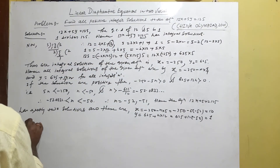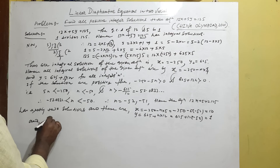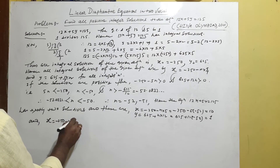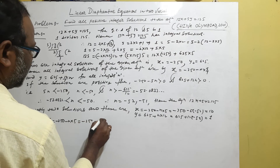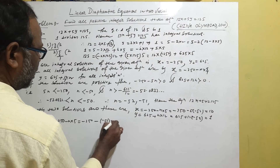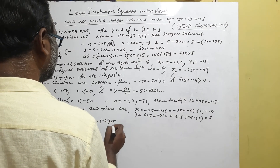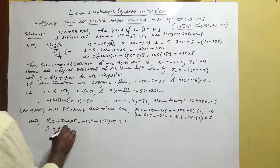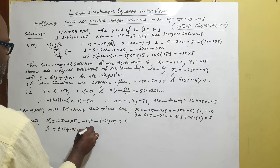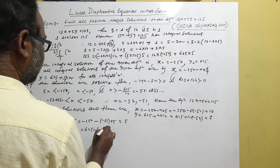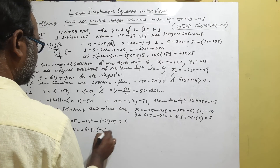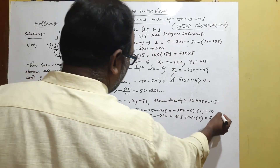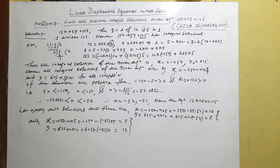For n = -51: x = -250 - 5×(-51) = -250 + 255 = 5, and y = 625 + 12×(-51) = 625 - 612 = 13. So the second solution is (x, y) = (5, 13). These two positive integer solutions are the complete answer to this question. Thank you for watching my video.